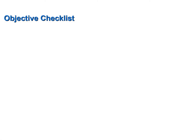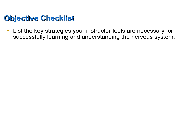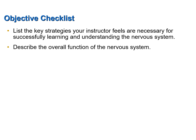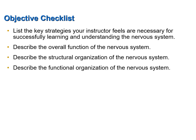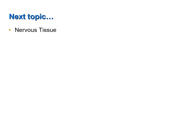Let's review the objectives this screencast was designed to help you achieve: list the key strategies necessary for successfully learning the nervous system; describe the overall function of the nervous system; describe the structural organization of the nervous system; describe the functional organization of the nervous system. The next screencast will discuss nervous tissue. Thank you.